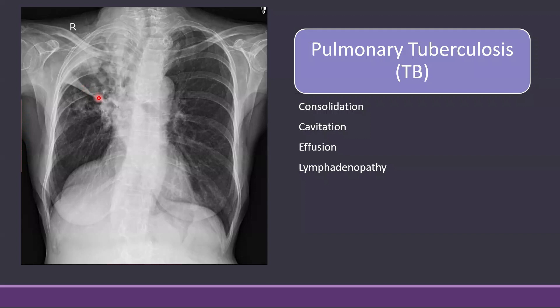This was a case of tuberculosis and the history was suggestive. There was a two to three months history of productive cough, fever, weight loss, and anorexia — and the fever was with night sweats. TB can present with a consolidation like this in the upper zones, with signs of volume loss as we can see here.